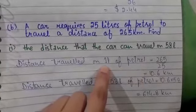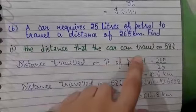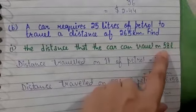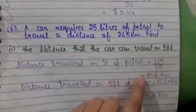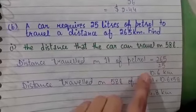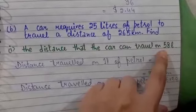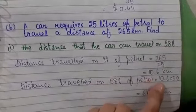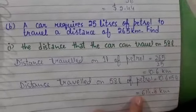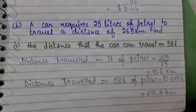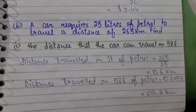Now we have to find the distance the car can travel on 58 liters. We will multiply this distance by this amount of petrol. So 10.6 multiplied by 58, the answer is 614.8 kilometers.